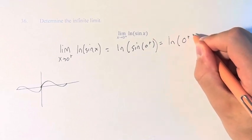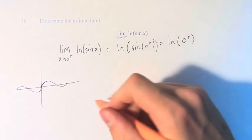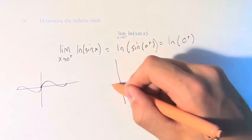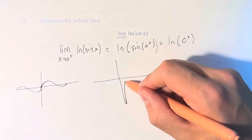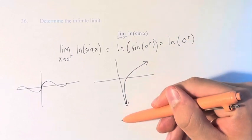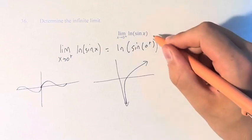So this is the ln of 0 from the right. And the ln of 0 from the right, if we look at the graph of that, it goes off to negative infinity as we approach 0 from the right. Therefore, the limit is equal to negative infinity.